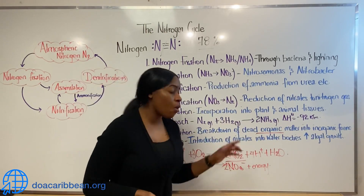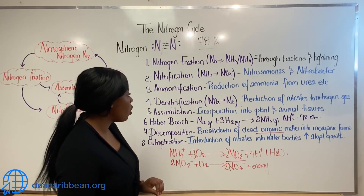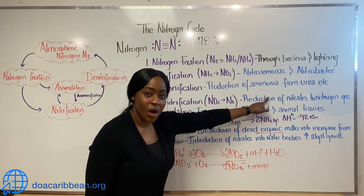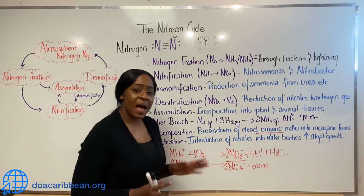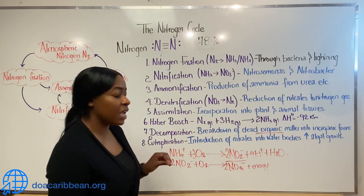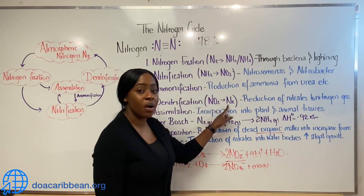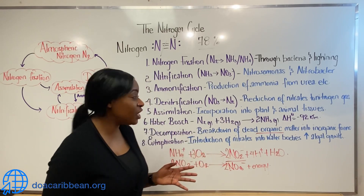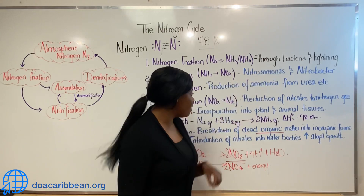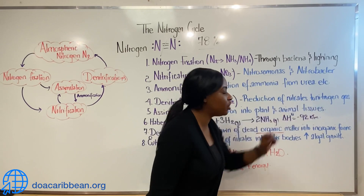During the breakdown of dead organic matter, we can also have the process of ammonification, which is the production of ammonia from other nitrogenous compounds. Lastly, there is denitrification, which enables nitrates to be converted to nitrogen gas. This is achieved again by the action of bacteria — there is the reduction of nitrates to nitrogen gas.